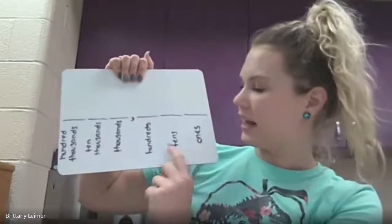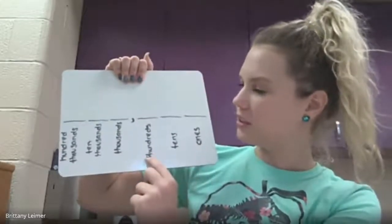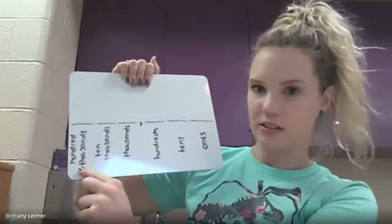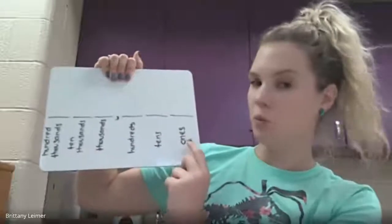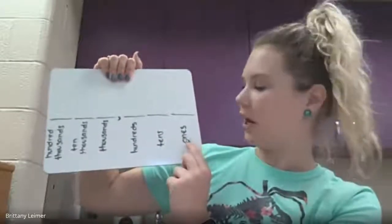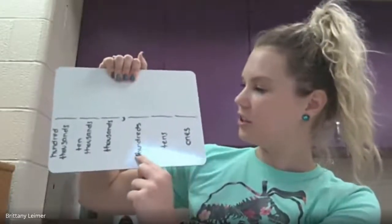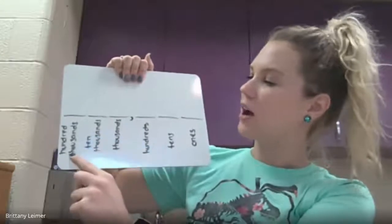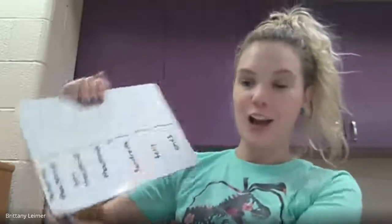One more time — say it with me: ones, tens, hundreds, thousands, ten-thousands, hundred-thousands. Ones, tens, hundreds, thousands, ten-thousands, hundred-thousands. All right, guys, what you just watched is the very beginning of third grade place value.